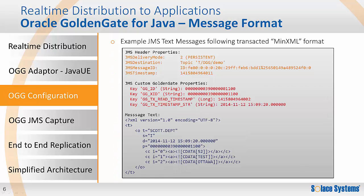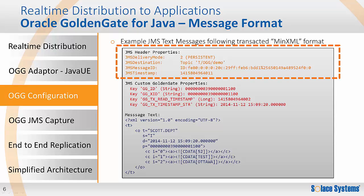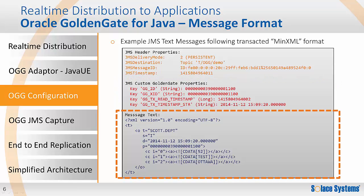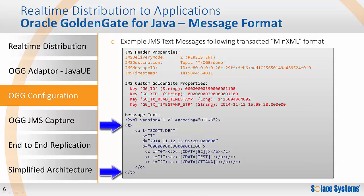Let's look at an example JMS message that would be generated by the configuration we just saw. The JMS message will have all the standard JMS message properties such as delivery mode and destination. By default, the GoldenGate handler will also augment the JMS message with some relevant custom properties — these will give information related to the GoldenGate trail file. And finally, the actual database operations will be encoded in the payload. This example shows the MinXML format provided by GoldenGate, where the XML will have a root element indicating a transaction, with one or more operational elements.